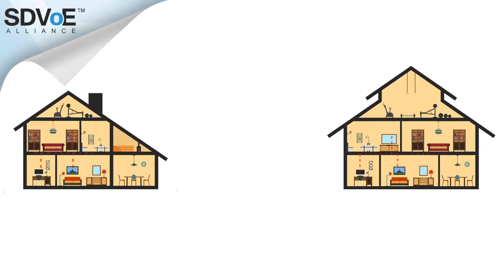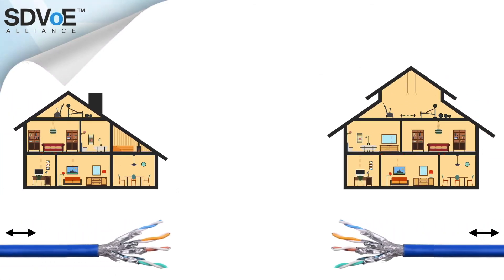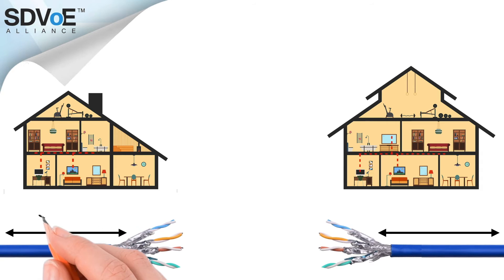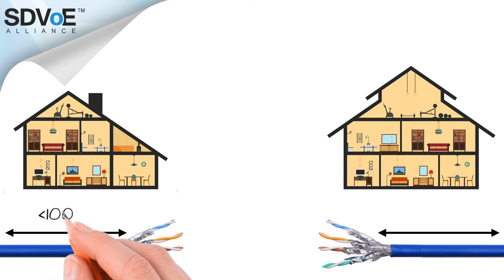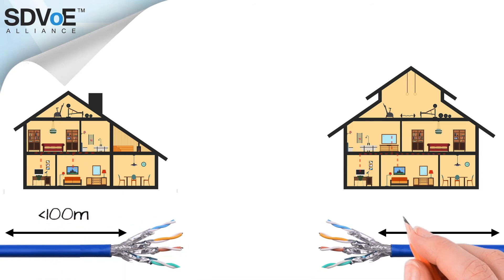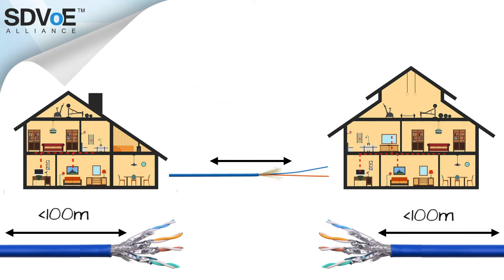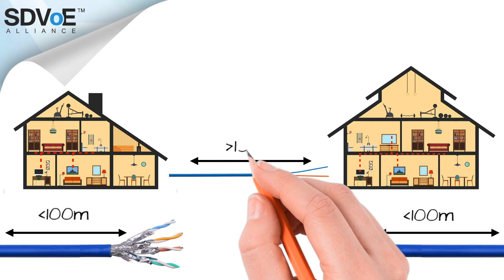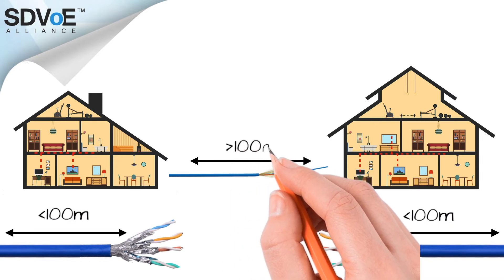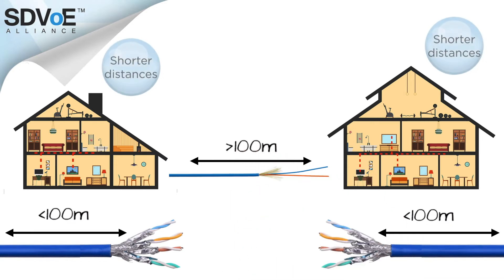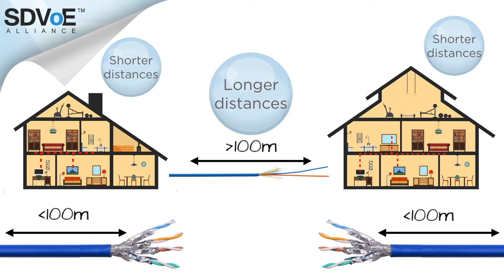Fiber is very much a part of the AV design process. And if your customer is expecting a 4K 4:4:4 60Hz signal over distances longer than 100 meters, fiber is not just an option — it's a requirement. And yet if your design has a mix of shorter and longer distances, fiber is the only choice for a single cable option which can easily facilitate both.